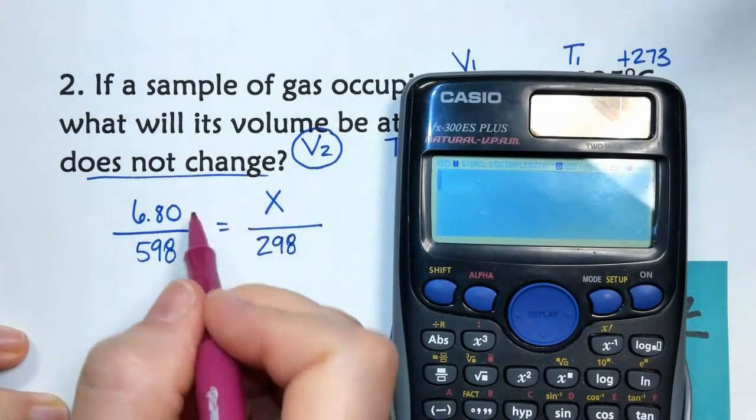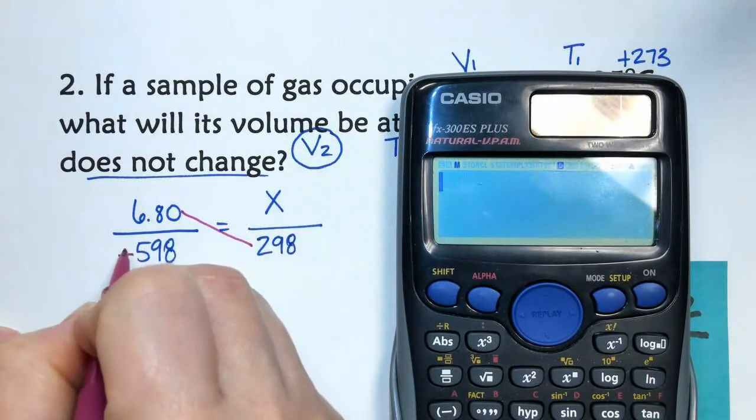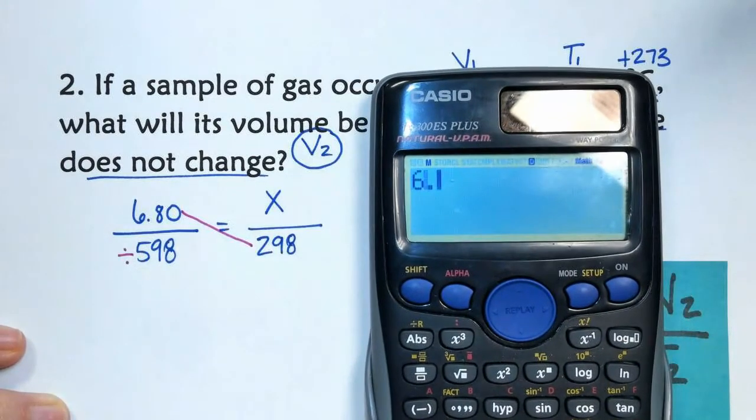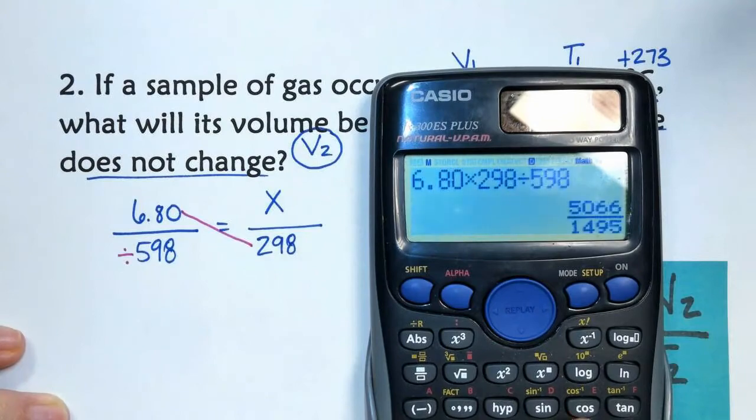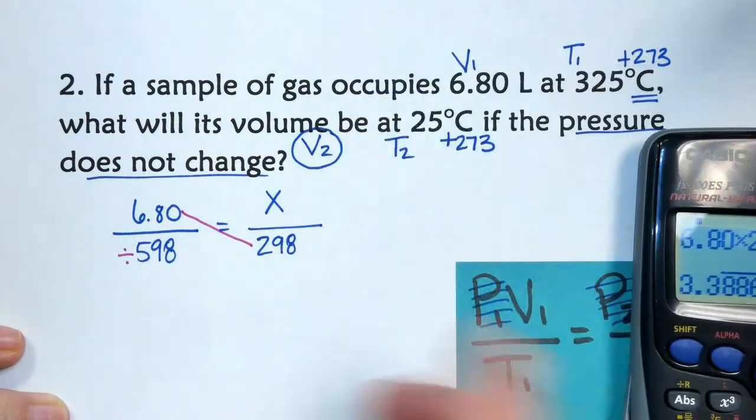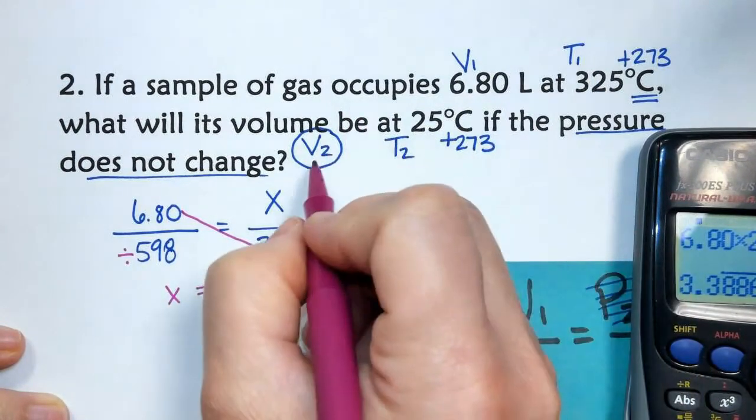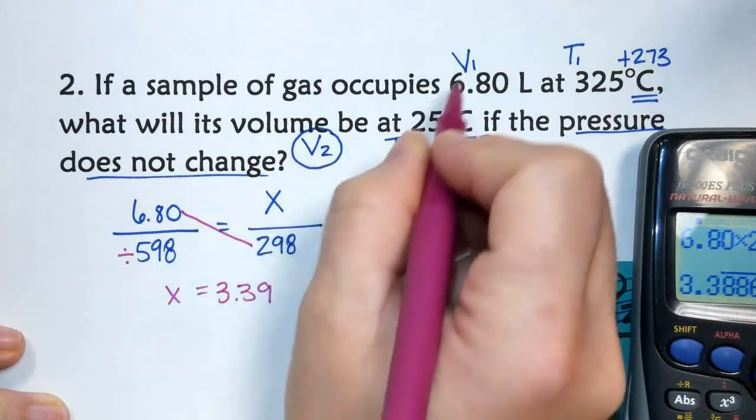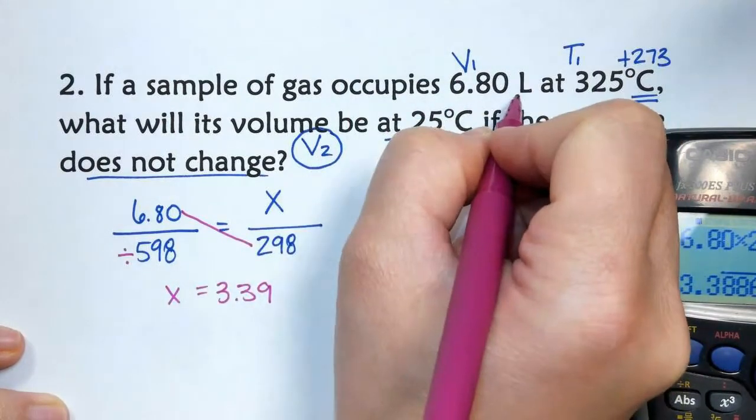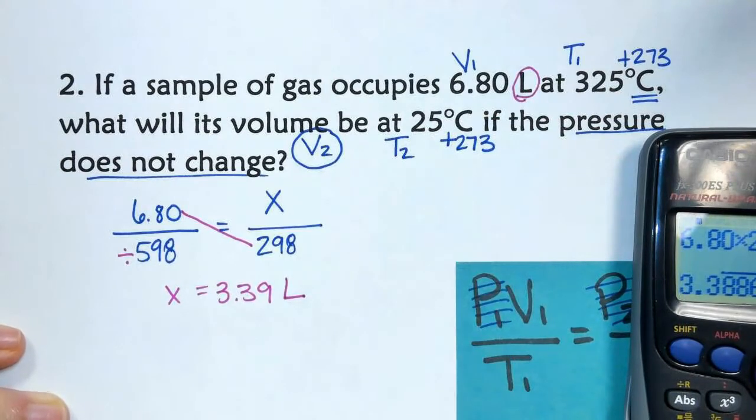Remember, to start your cross, not at the X, so we're going to multiply these two numbers, and then the last number left, we're going to divide by 6.80 times 298 divided by 598 equals 3.39. So X equals 3.39, whatever the unit of V1 is, is going to be the unit of V2, and V1 was in liters, and so that's how we know this is also in liters.